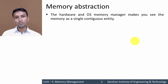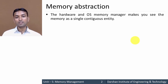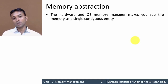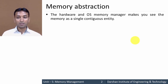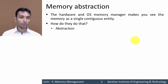We are using different types of memory in our system such as RAM as well as ROM. But we can't access the memory as a single continuous entity, just because of the hardware as well as the OS memory manager. Hardware as well as the OS memory manager makes it possible that we can see the memory as a single continuous entity, and they do that by using abstraction.